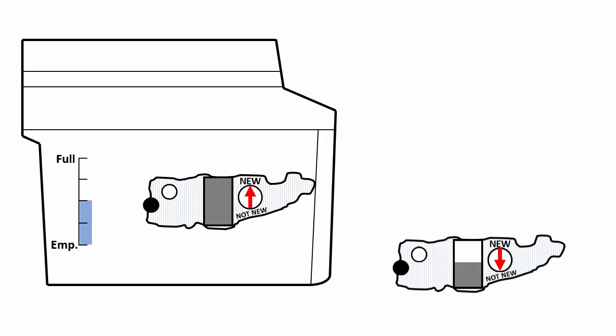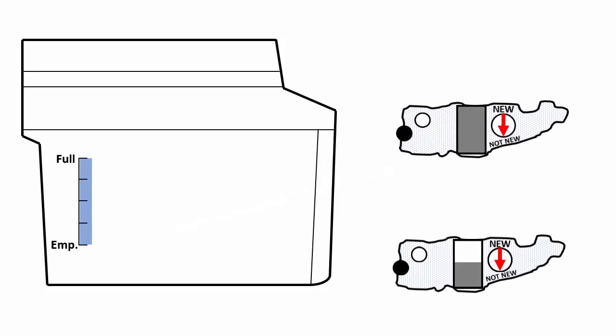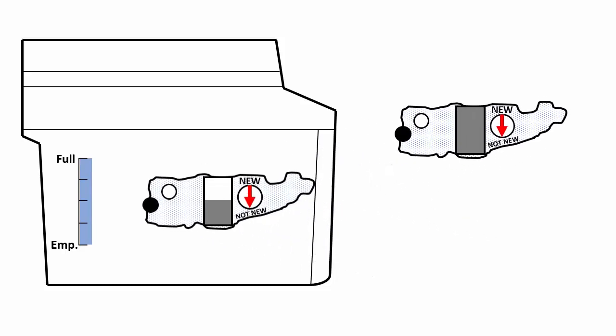This turns the reset lever and resets the toner meter to full. You set aside the new cartridge and reinsert the older one. Now the printer thinks the older cartridge is full. The cartridge runs out without warning.